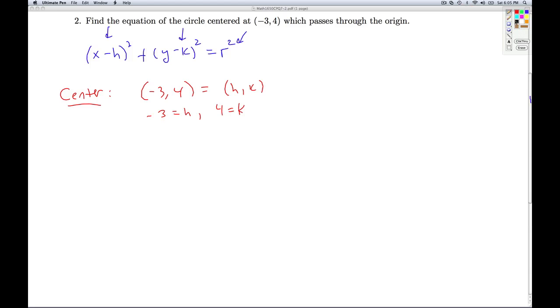And so we get the equation of the circle at this point to be (x - (-3))² + (y - 4)² = r². And I can simplify this a little bit to (x + 3)² + (y - 4)² = r². I still need to determine what the r² is. So how can I do that? Well, what piece of information haven't I used yet? The fact that the circle passes through the origin. That's the point (0, 0).